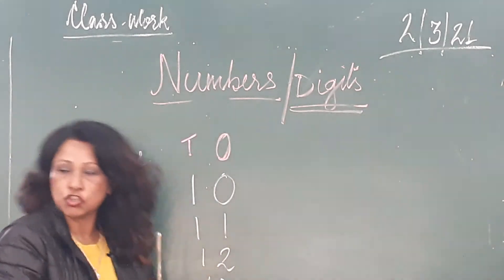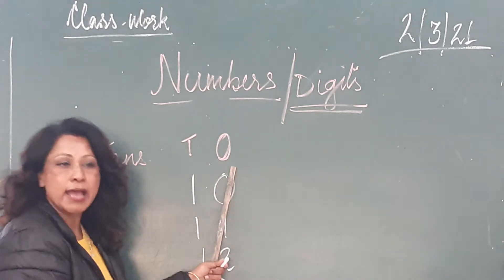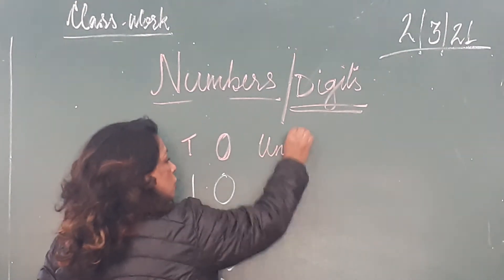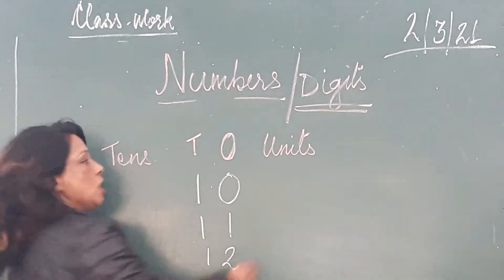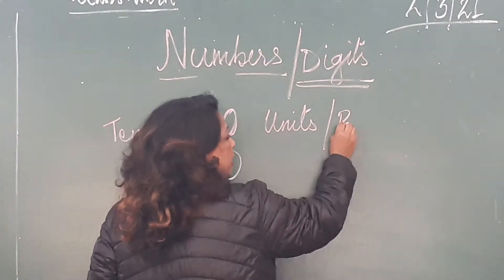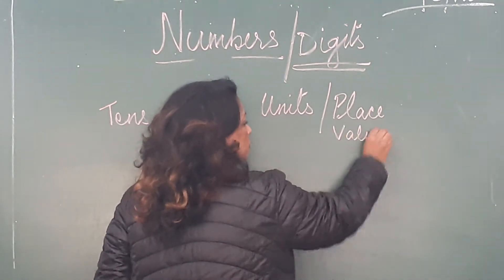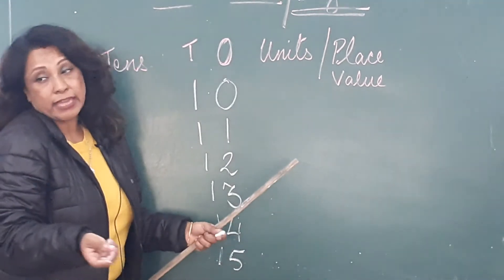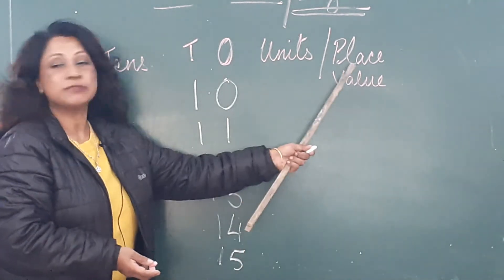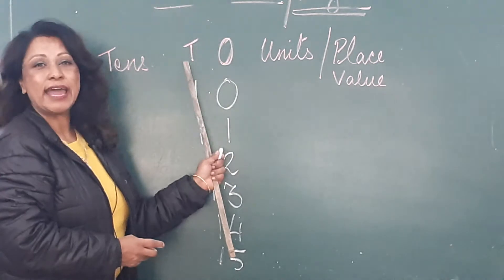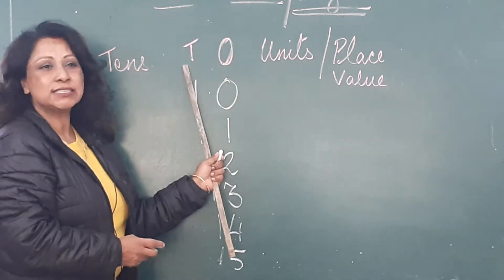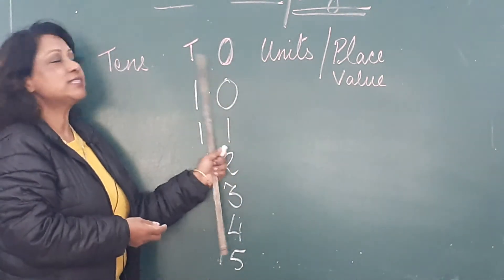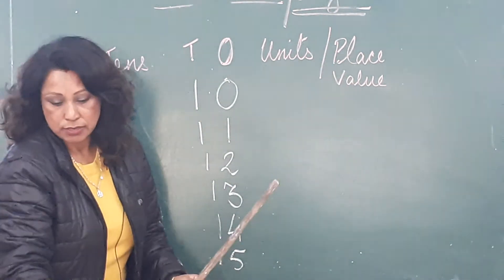So ones and tens — what are they called? They are called units, or they are also called place values. Sometimes I can say units, or sometimes I can say place values — they mean the same. For ones and tens, I can say units or place values.